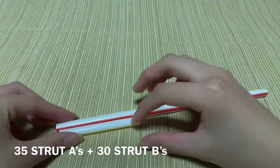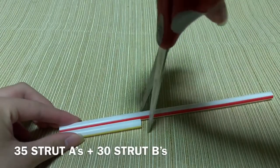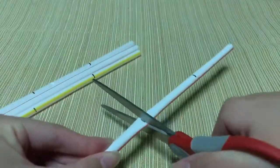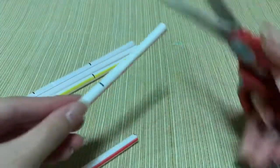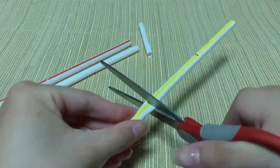You'll need a total of 35 strut A's and 30 strut B's. We recommend using a ruler and accurately cutting each strut once, then using it as a measurement to save time cutting the rest. This may take a while, but the result will end up looking great.